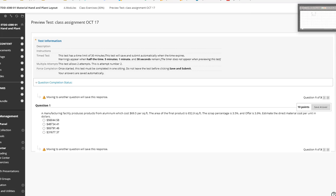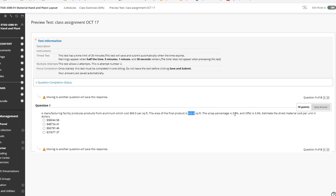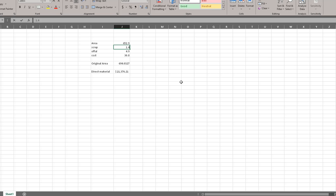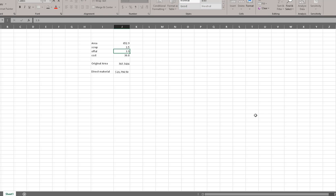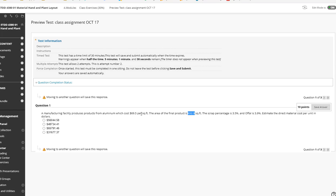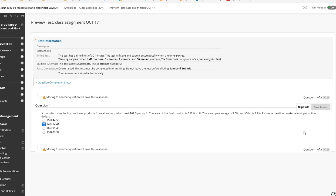So you can start with the final product area which is 652.9 square feet. Then scrap is 3.5% and offal is 3.9%. And the cost associated with that is $69.5. So this will give $48,734 which is the second choice.